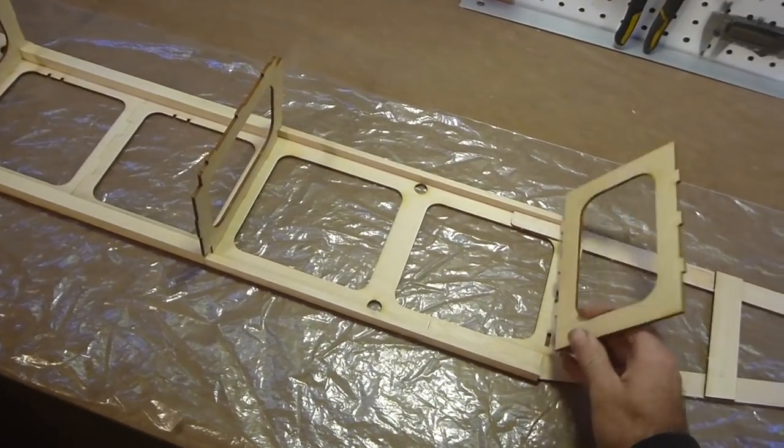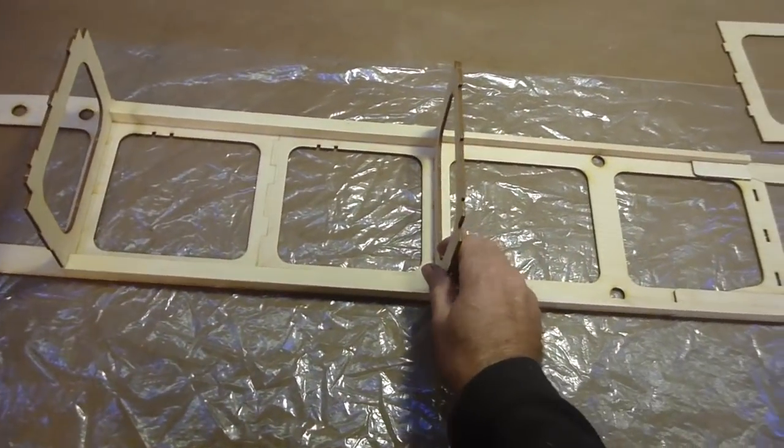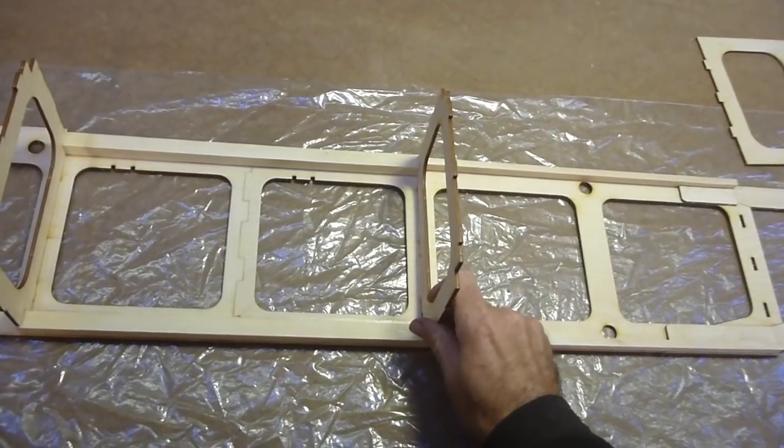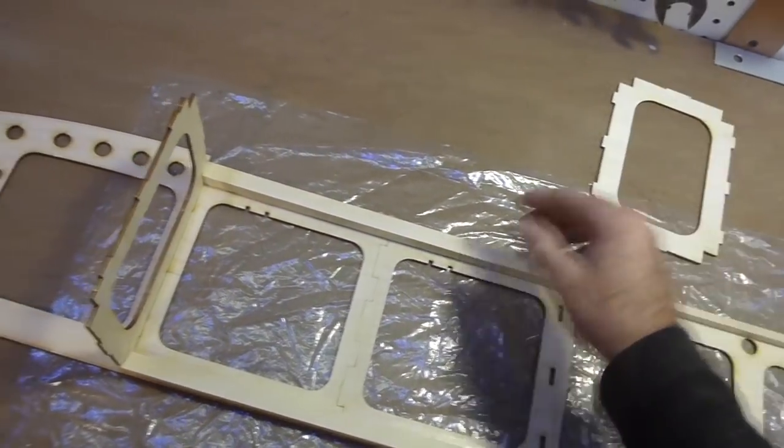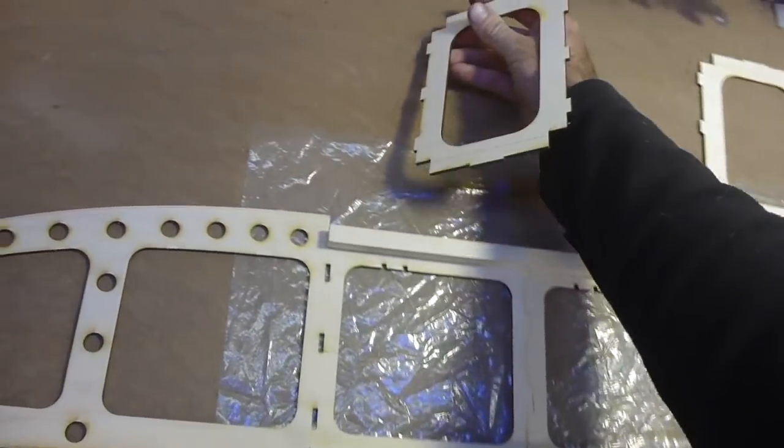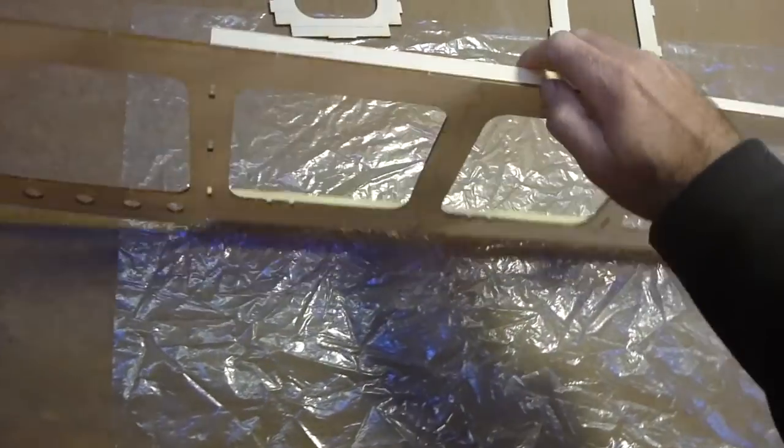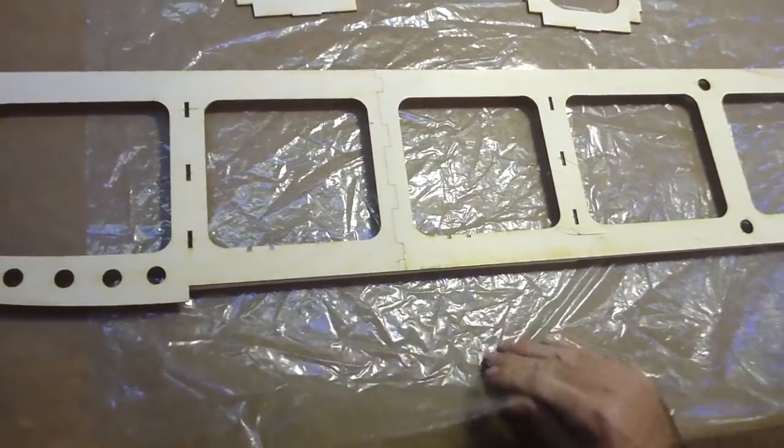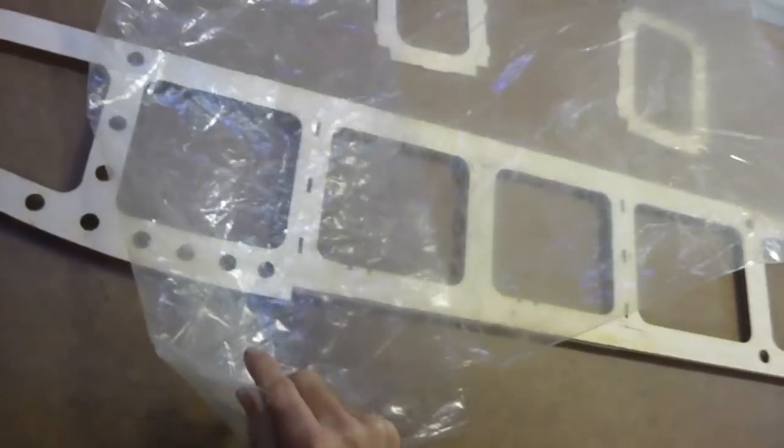Next, we'll remove the bulkheads and set them aside. Flip the fuselage side over. Move the plastic sheet to the top of it.